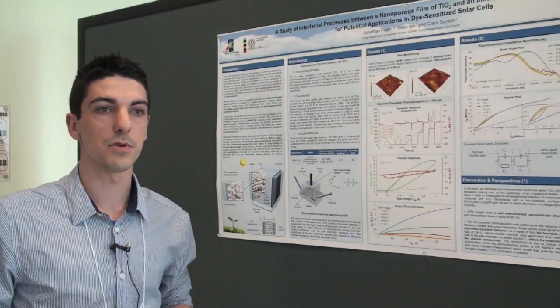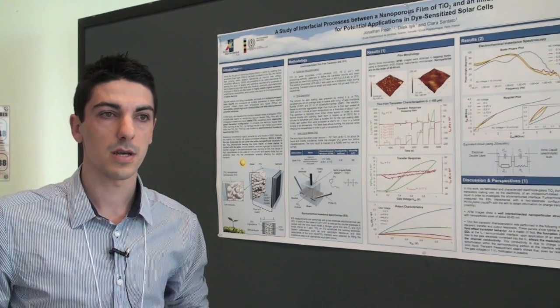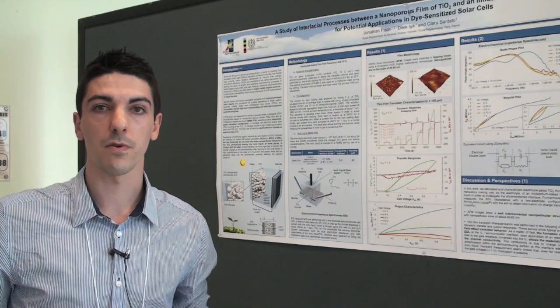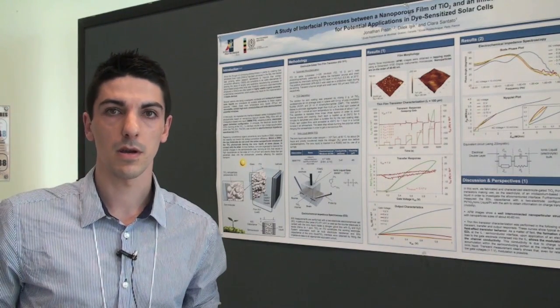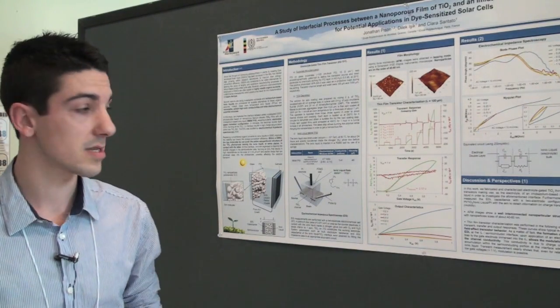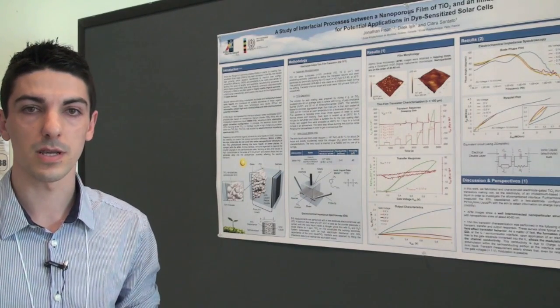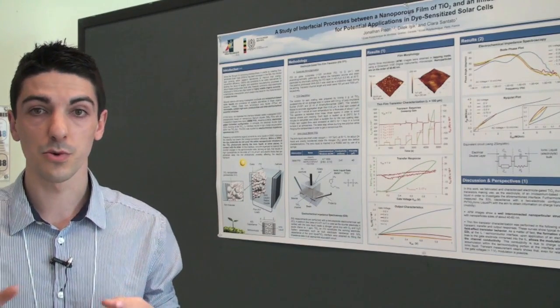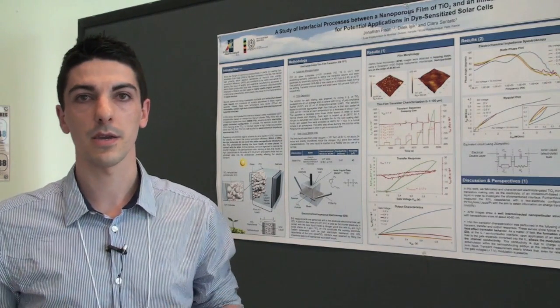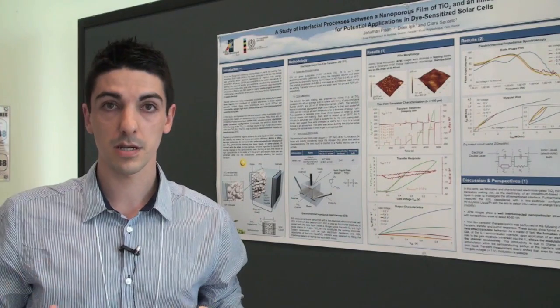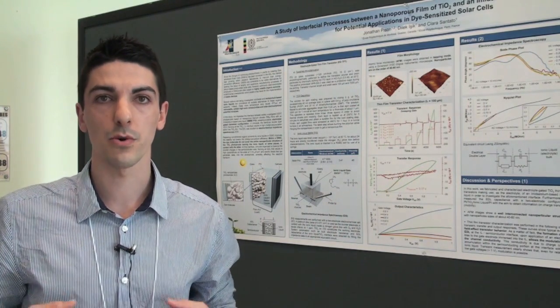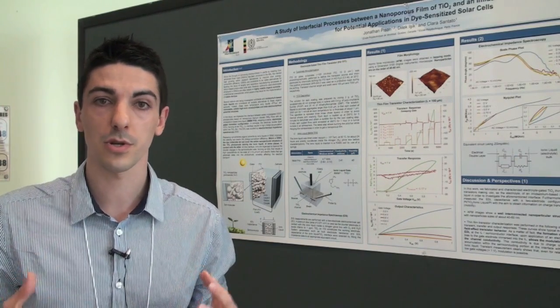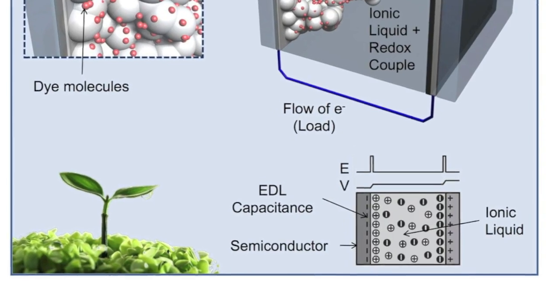But the problem is, the majority of electrolytes are based on highly volatile organic solvents, which actually poses a key issue for the implementation of stable devices. So an alternative to this is to use an ionic liquid. It's actually a molten salt at room temperature. But the thing is, when you replace an organic solvent by an ionic liquid, you improve the stability, so that's exactly what we are looking for. But you also lower the energy conversion efficiency, and we actually want to understand why.